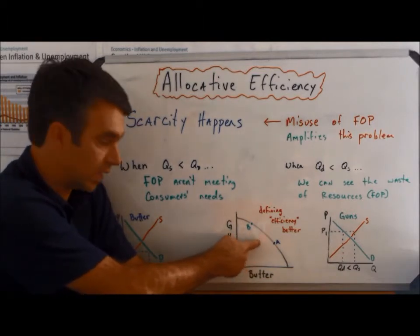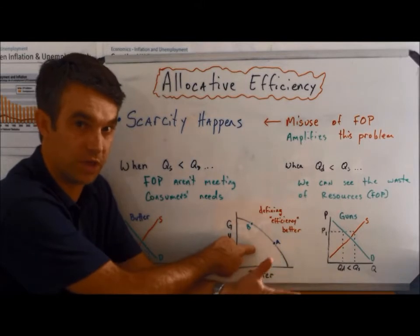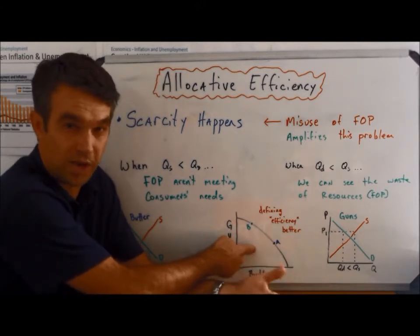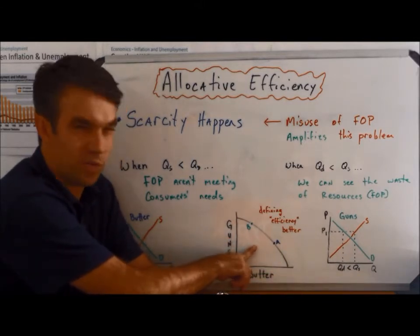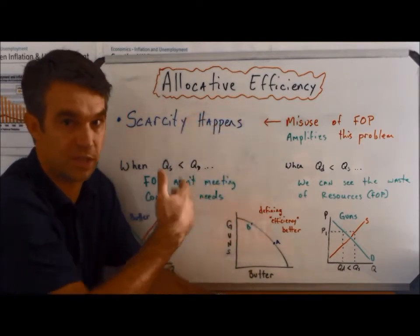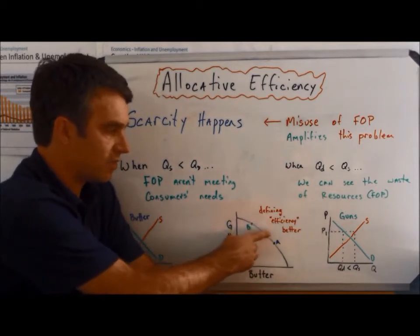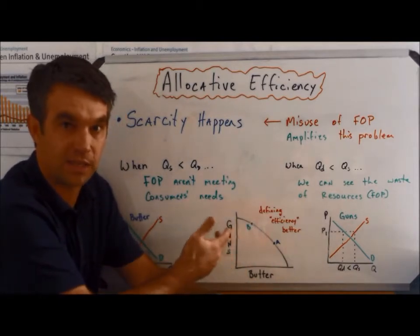Remember, we indicated that any point inside of the PPC meant that you were at less than 100% production, so you were being somewhat inefficient. This would be kind of what we call productive efficiency, which would be a different type of efficiency that we revisit later on. Allocative efficiency is defining efficiency a little bit better.